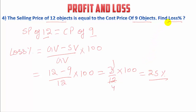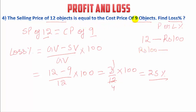Remember, in this question it is given to find loss percentage, but to confuse students, the examiner writes 'find profit or loss percentage.' Many students get confused whether there is a profit or loss. I will tell you how to check. The selling price of 12 objects — let's say he sells 12 objects for rupee 100. From that 100 rupees, he can now only buy 9 objects. Means he sold 12 objects for 100 rupees but can only buy 9 back — there is a loss of 3 objects. So we have to find the loss percentage. No need to be confused.